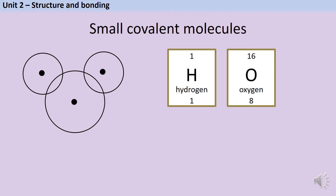We can do something similar with water. Oxygen is in group six, and therefore it needs two electrons to get a full outer shell, so it needs to make two strong covalent bonds — dot cross, dot cross. That's only four electrons, so we need to draw another four, which makes sense because oxygen had six outer shell electrons and we've only used two of them so far. The remaining four go here as two lone pairs.